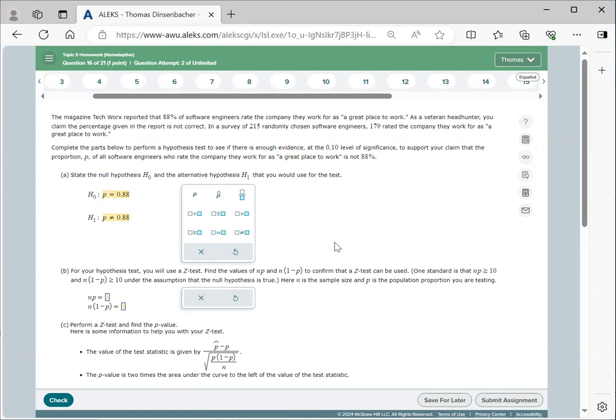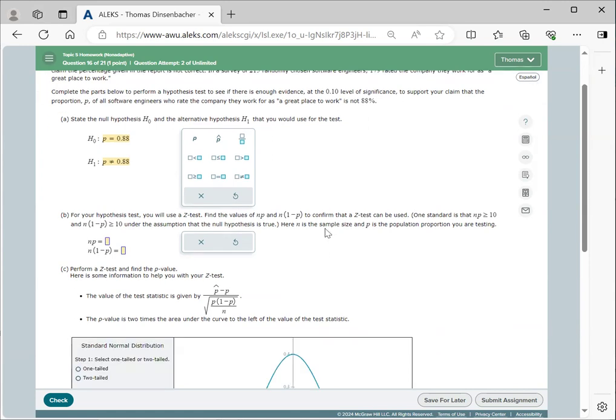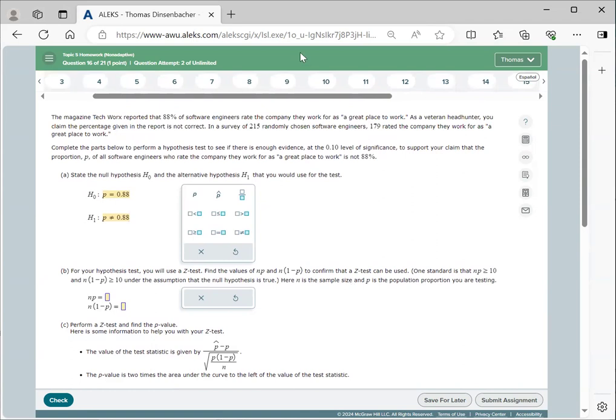We continue here by verifying that the test is valid. Both NP and N times 1 minus P should be greater than or equal to 10. We'll do that calculation next. And it turns out that in this case, NP or 215 times 0.88 is 189.2. N times 1 minus P is 215 times 0.12 or 25.8. So we satisfy our test criteria, and we can apply the z-test.